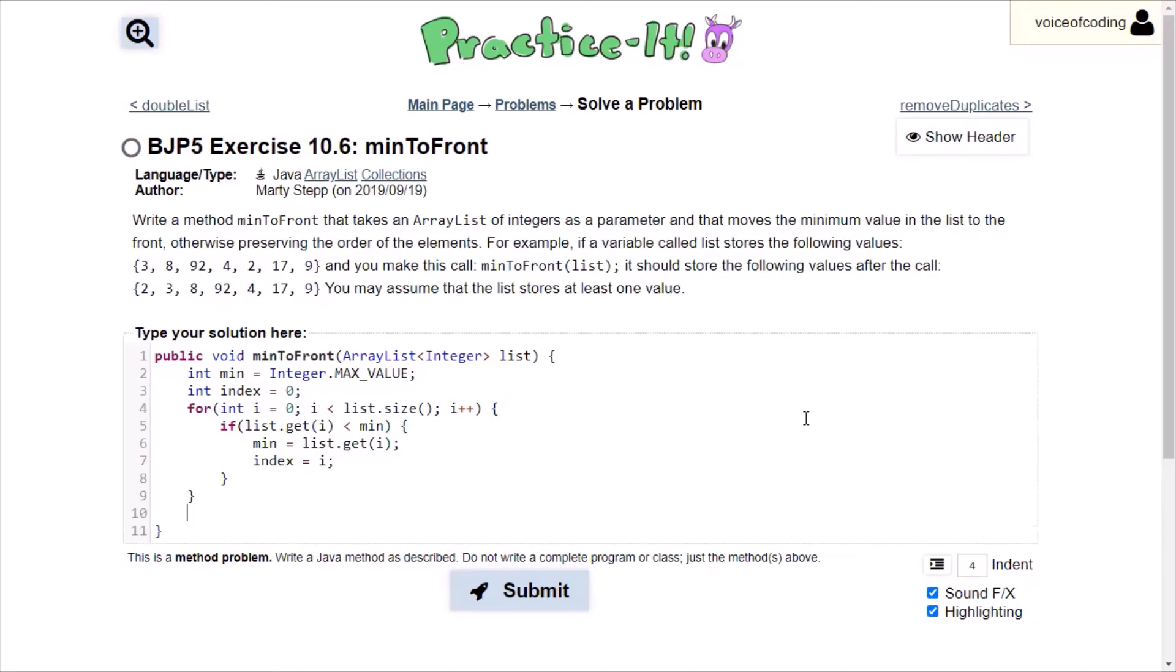We don't really need the minimum value at this point anymore. But we do need the index because we need to remove the minimum value and then add to the front of the list.